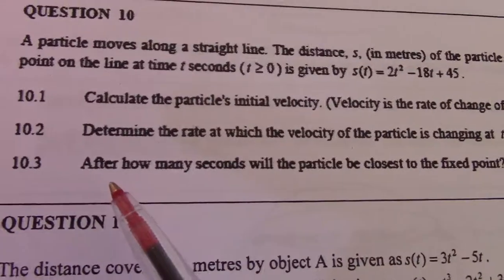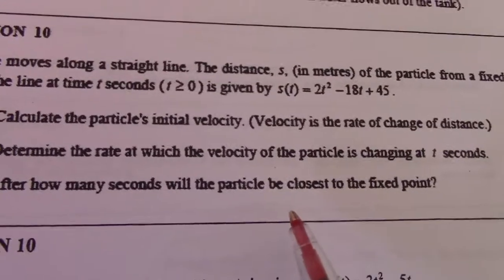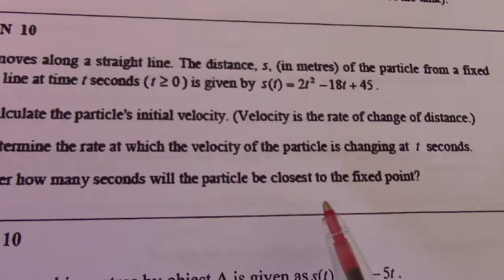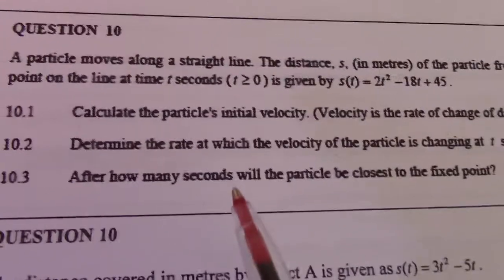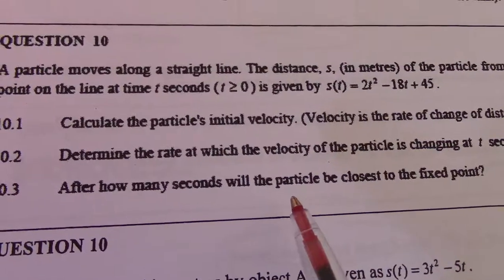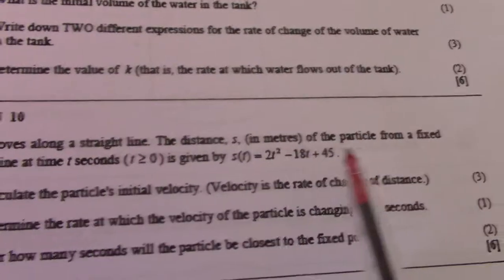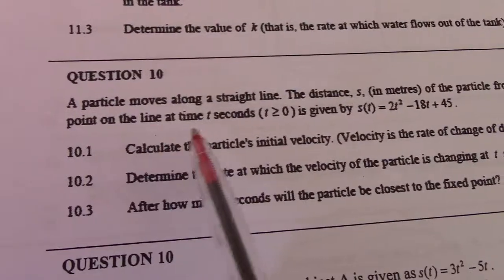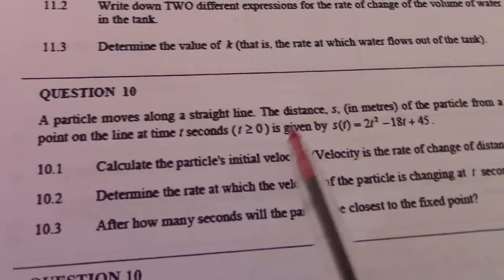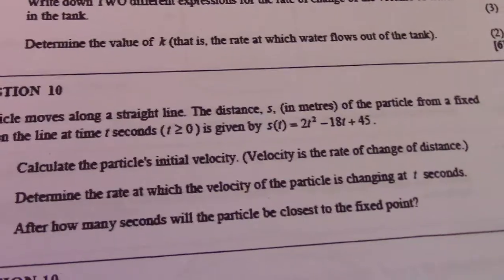10.3, after how many seconds will the particle be closest to the fixed point? So, we're looking at the velocity, making that equal to 0. Remember, the distance of the particle from a fixed point on the line at time t seconds. So, we have to look at how the distance in time changes.